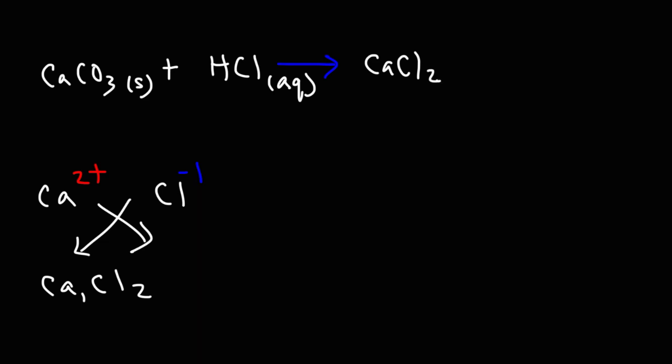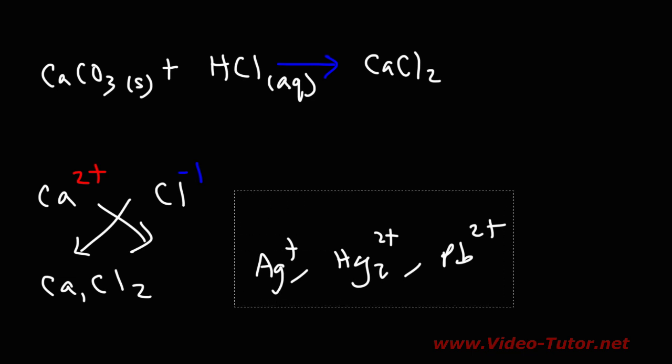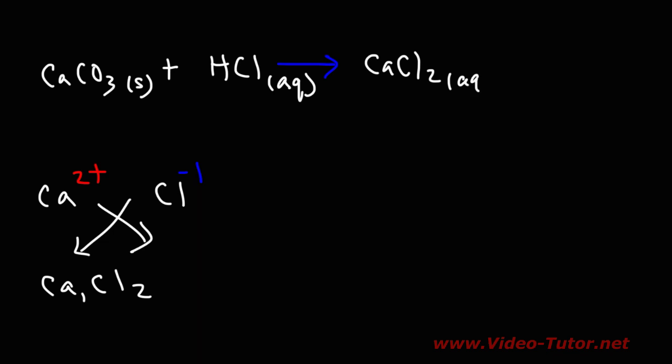Now calcium chloride, is it soluble or insoluble in water? This is where you need to know the solubility rules. Chlorides are generally soluble in water with the exception of silver, mercury, and lead. When chloride is bonded to one of these metals or metal ions, it's going to be insoluble. So calcium chloride is soluble, which means that it dissolves in water. Thus we're going to put the aqueous phase.